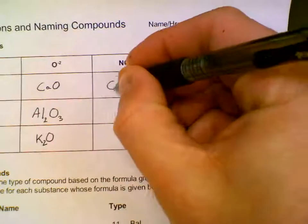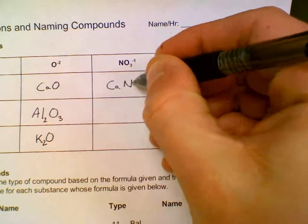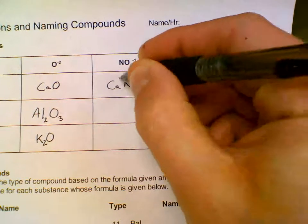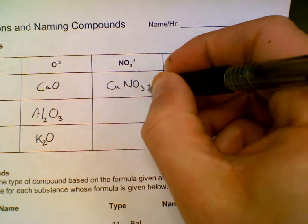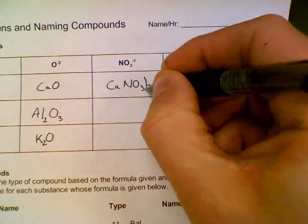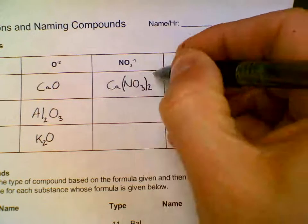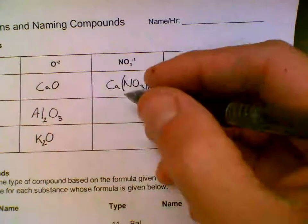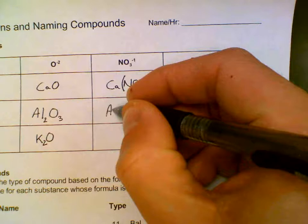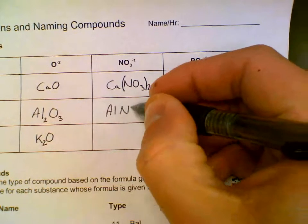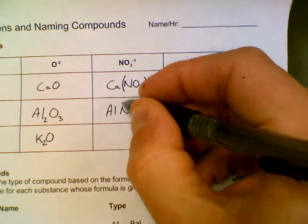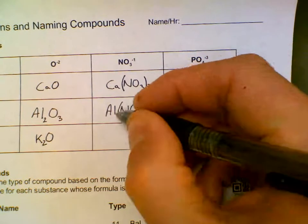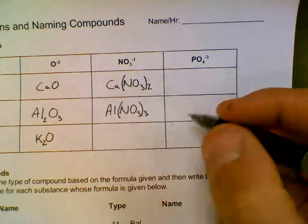Next column, Ca(NO3)2. The 2 on the Ca goes on the back side of the NO3, but you need to write parentheses then. The 1 on the NO3 goes on the Ca, we don't need to write that. Al(NO3)3: 3 from the Al goes on the back side of the NO3. The 1 from the NO3 goes on the Al, we do not need to write that.